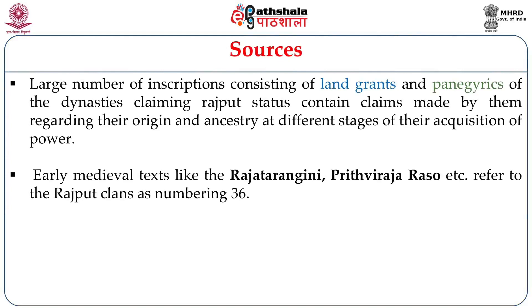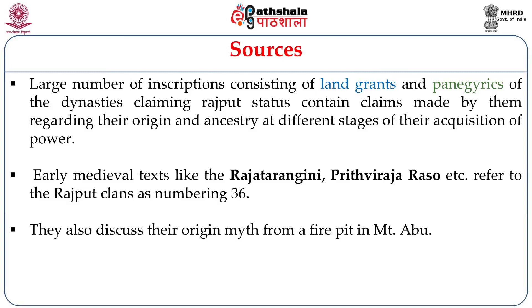There are also literary texts like the Rajatarangini and the Prithvirajarasa which refer to the 36 Rajput clans. Some legends and Bardic traditions contain a story regarding the origin of the Rajputs. This story appears in earlier texts like the Mahabharata and some Puranas, and it later reappeared in the Bardic tradition. The story tells us that there was a sage called Vashistha who had a wish-fulfilling cow which was stolen by another sage, Vishwamitra.